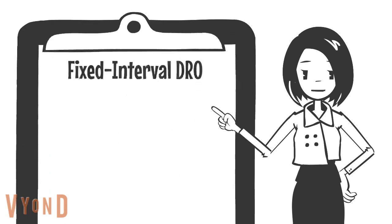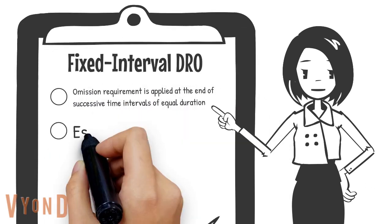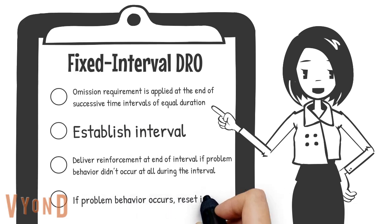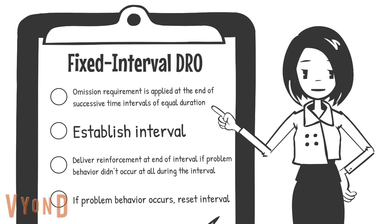There are different types of DRO. The first is fixed interval DRO, or FIDRO. The omission requirement is applied at the end of an interval, and the intervals are of equal duration. You first establish the interval — say, every minute — and you deliver reinforcement at the end of the interval if the problem behavior did not occur at all during the interval. If the problem behavior does occur, you reset the interval.